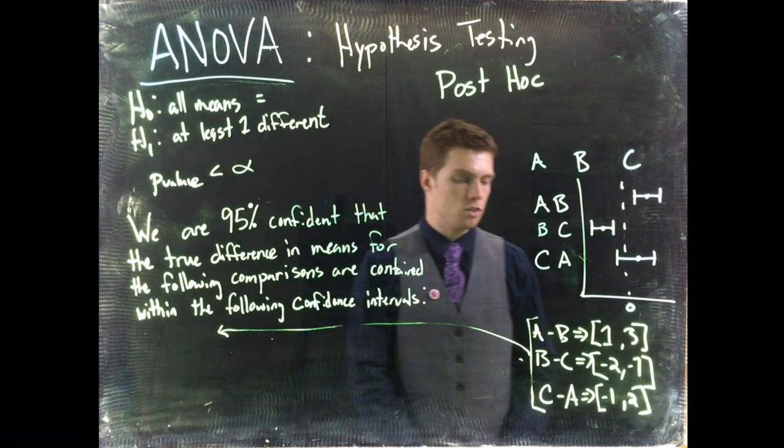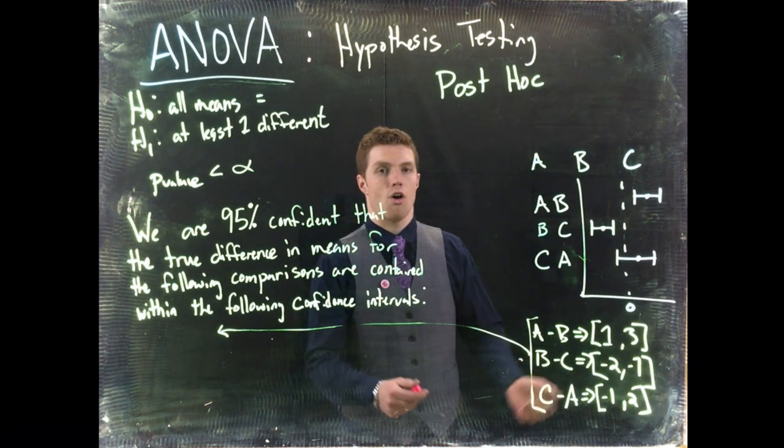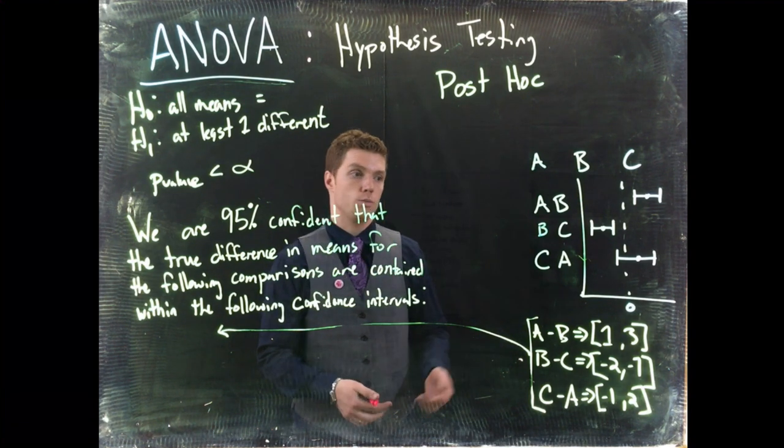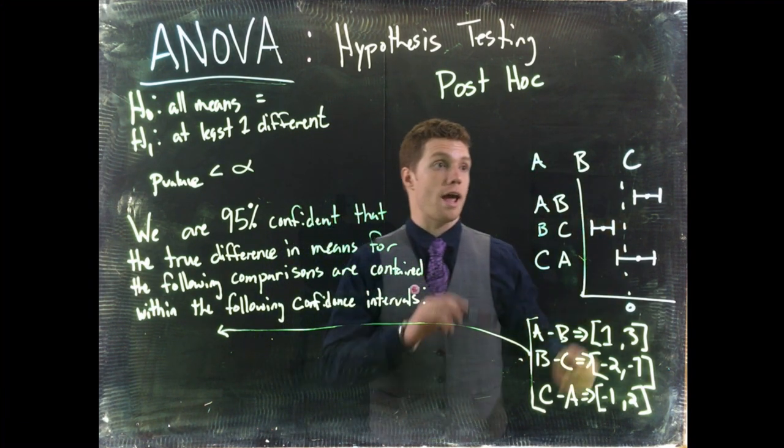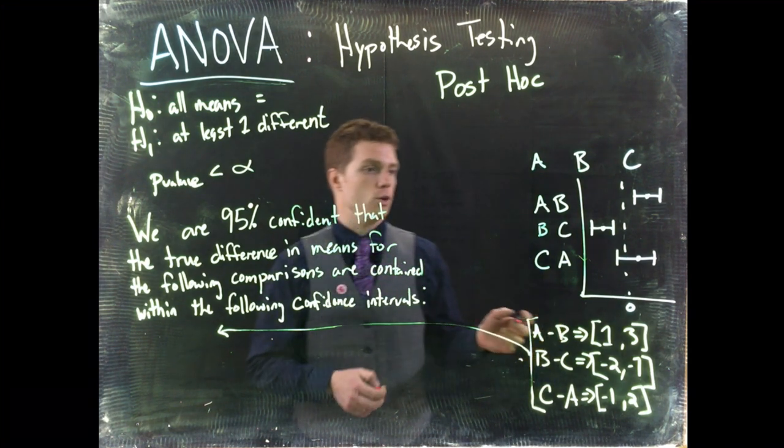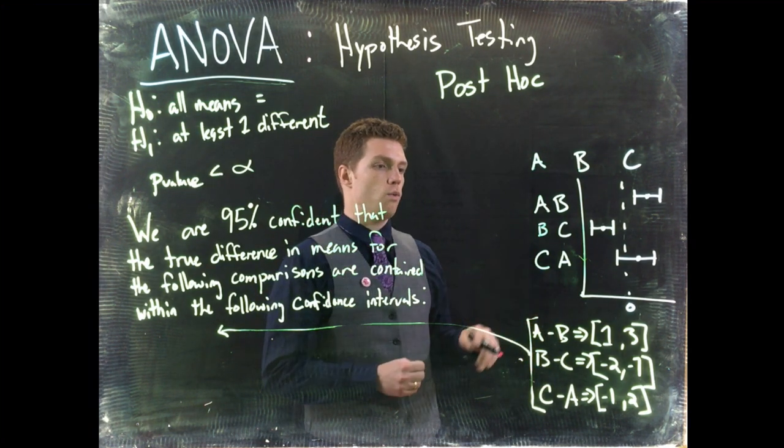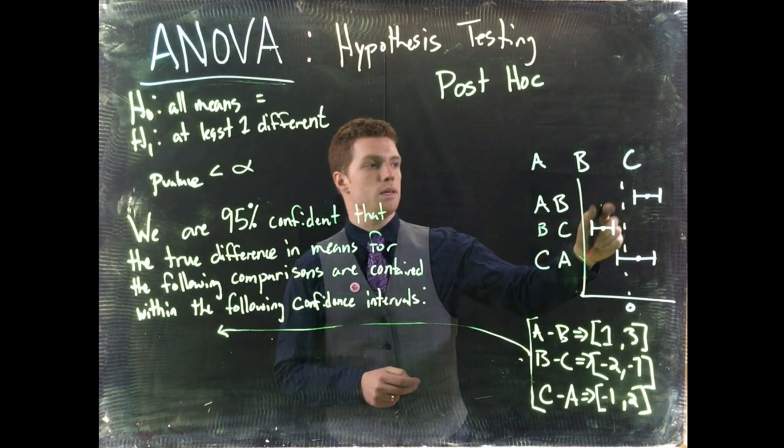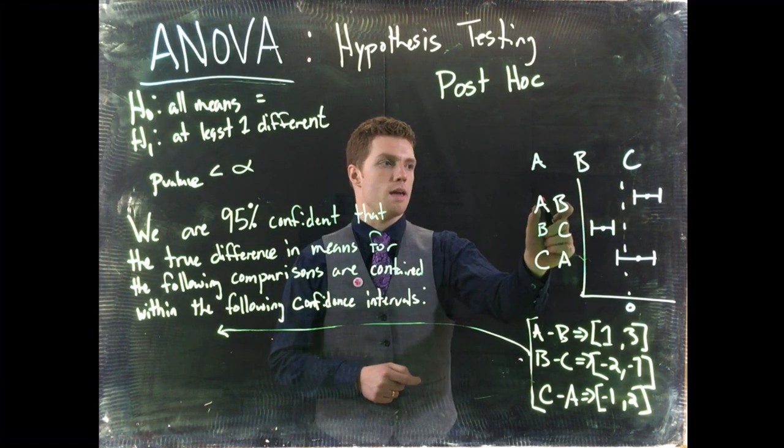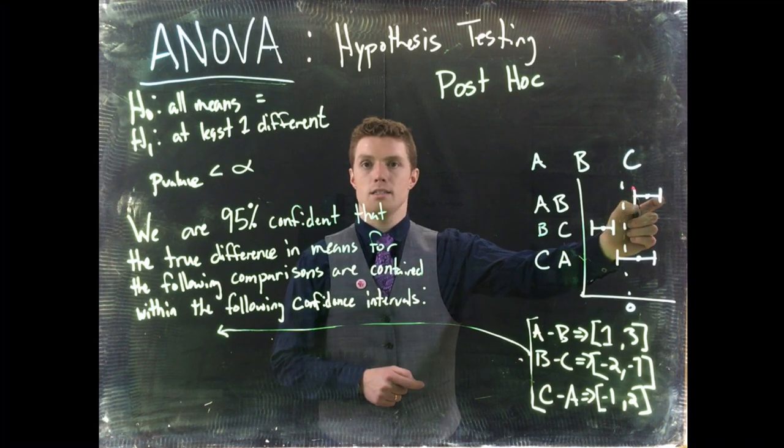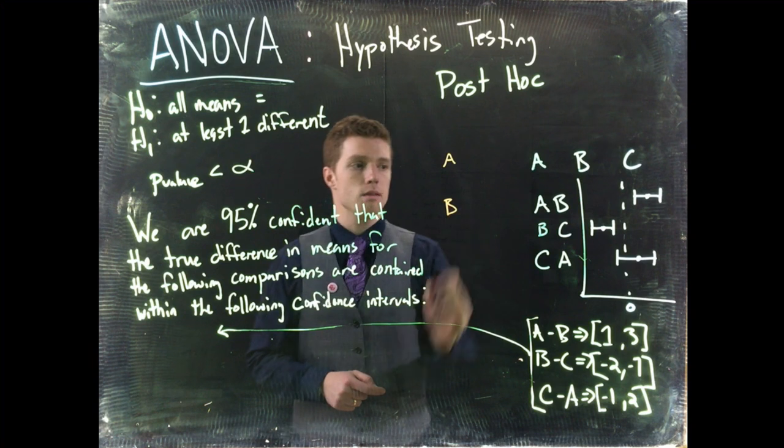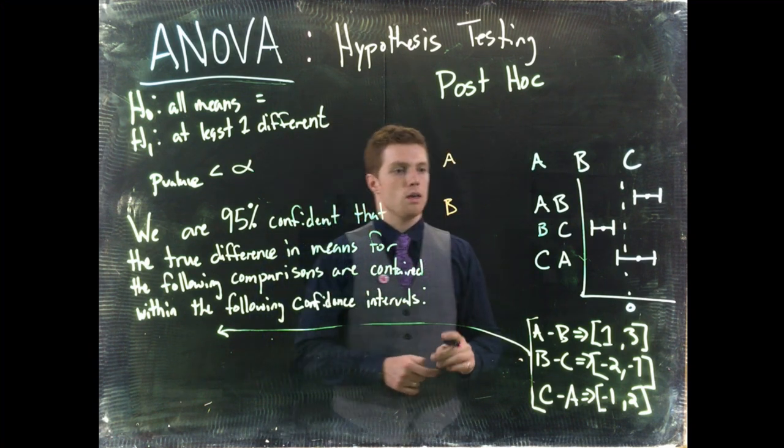Now once we do that, now we need to talk about the ones that in fact are significantly different and maybe which ones are the greatest and which ones are the smallest. So if we look at this, we can actually order our groups. We know for example that A is bigger than B because this would be A minus B and it is positive. So we can have that A is bigger than B.